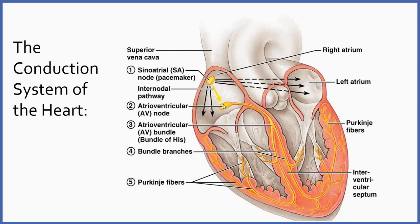From the AV node, conduction travels down the bundle of His, then bifurcates into the right and left bundle branches — bundles of rapidly conducting Purkinje fibers. The impulse spreading through the ventricle is very rapid, causing a rapid wave of depolarization — a wave of sodium rushing into cells — and contraction should follow. Just because there's electrical conduction doesn't guarantee we'll get contraction.